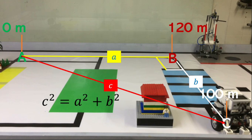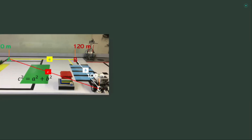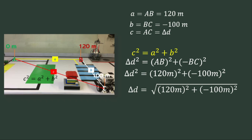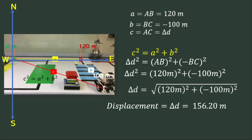A is side AB, which is 120 meters; B is side BC, which is 100 meters; and C is side AC, which is the hypotenuse and also the displacement of the car. So delta D² equals AB² plus BC², giving delta D² equals (120 m)² plus (100 m)². Then delta D is equal to 156.20 meters. The displacement's direction is between the south and east, so the final displacement is 156.20 meters south of east.